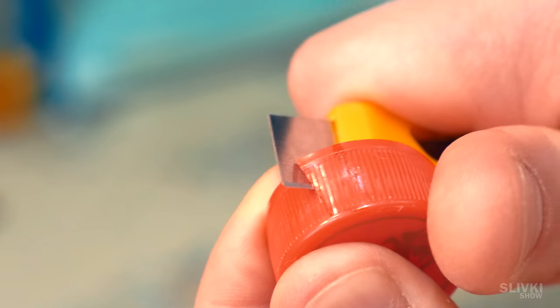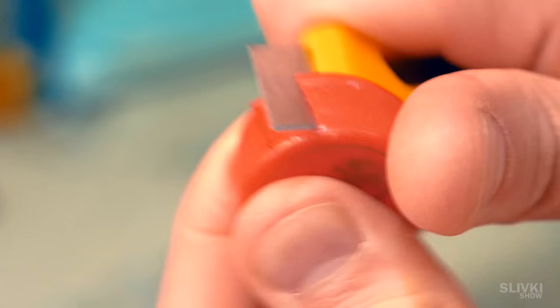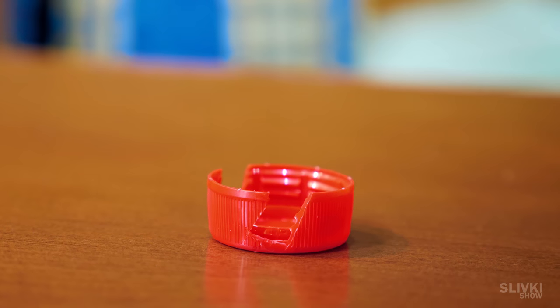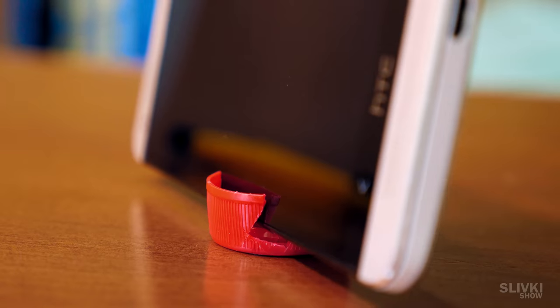Take the plastic cup and make two cuts at an angle, bend and cut this piece. Do the same with the other side so you get that sort of thing, which will serve as a great holder for your smartphone.